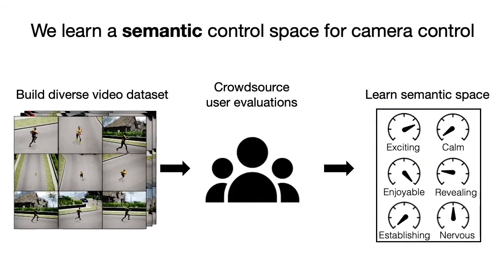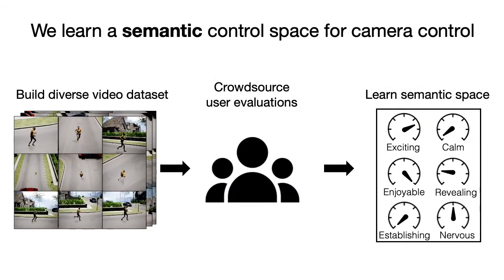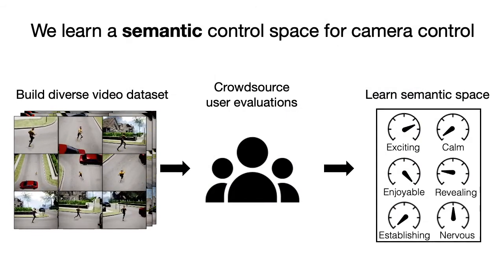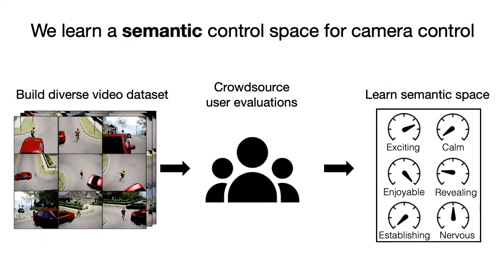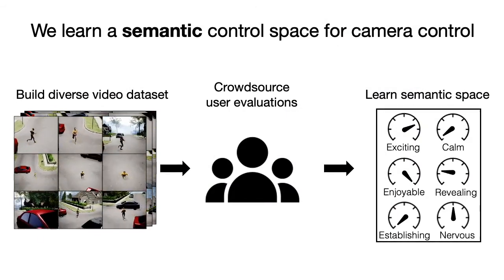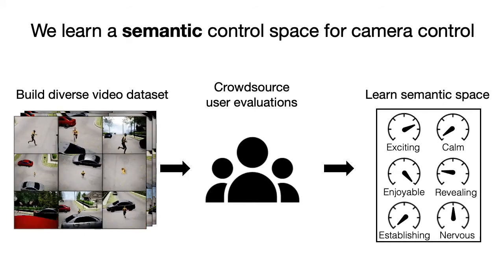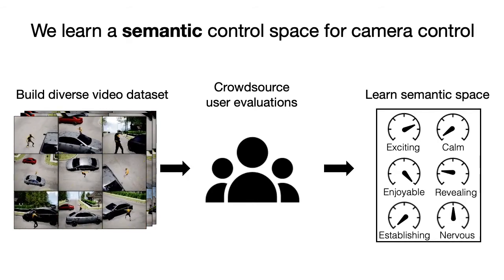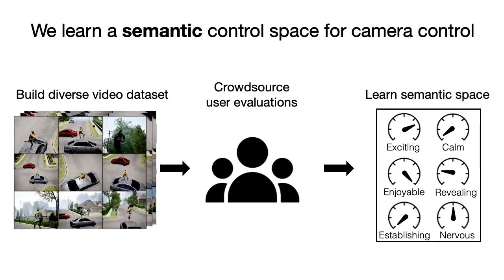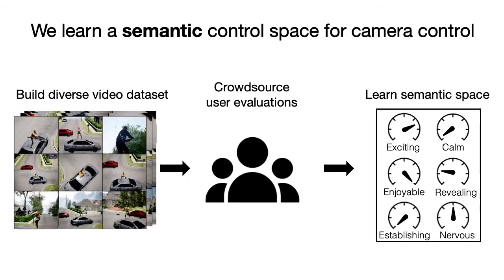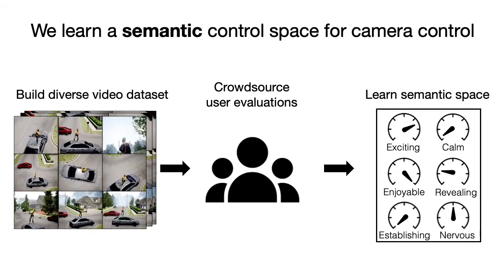We do this in three main steps. First, we build a diverse video dataset that is evaluated by hundreds of users in a crowdsourcing platform. Then we extract features from this data using machine learning models in order to learn a semantic control space.